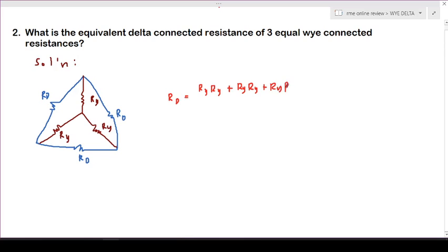Ry, all over the resistance adjacent to our Rd, and that will be Ry. And since we have one, two, three, we have three Ry times Ry, so that is three Ry squared all over Ry.